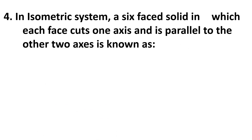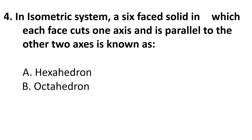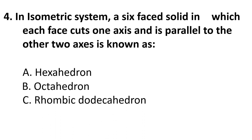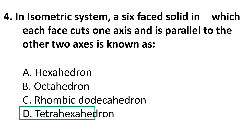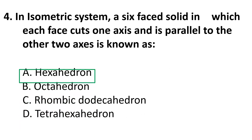Question 4: In the isometric system, a six-faced form in which each face cuts one axis and is parallel to the other two axes is known as: A) Hexahedron, B) Octahedron, C) Rhombic dodecahedron, D) Tetrahexahedron. The correct answer is A) Hexahedron.